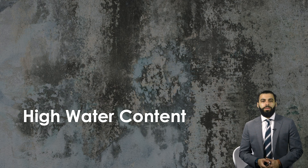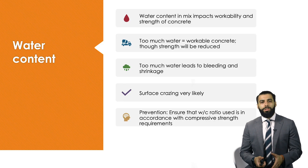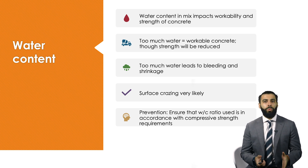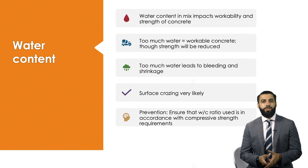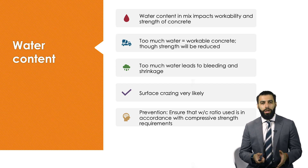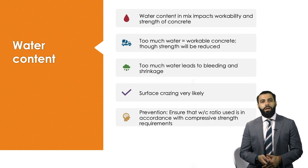The second construction defect is associated with high water content. Increasing the water content in your concrete mix will produce a more workable concrete — it's easier to pour and transport. However, too much water will lead to a concrete mix that's not as strong. You will also experience issues with bleeding and shrinkage, and it's very likely you will get surface crazing. To prevent this, make sure the water-to-cement ratio in your concrete mix follows what is recommended in the standards.